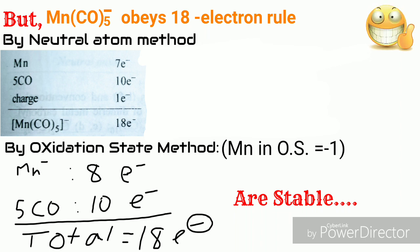So here Mn⁻ gives 8 valence electrons, 5 CO gives 5 × 2 equals 10 electrons, therefore total 18 electrons. Similar case for cobalt tetracarbonyl negative charge, so these are stable.